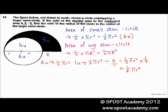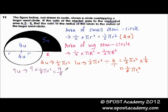Since number times number and alphabet times alphabet, 1 unit equals 1 over 8 pi r squared. The area of the big semicircle is equivalent to 4 units plus 5 units, a total of 9 units. So 9 units equals 9 times 1 over 8 pi r squared, which gives us 9 over 8 pi r squared.